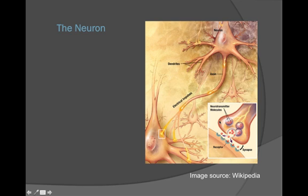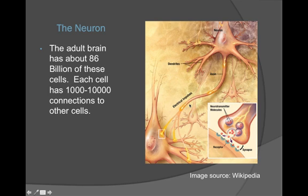And those chemicals are called neurotransmitters and there are a variety of those. Now here's what's important: the adult brain has about 86 billion of these cells, and each of these cells has approximately anywhere from 1,000 to 10,000 connections to other cells.